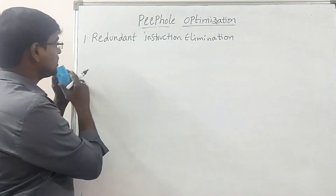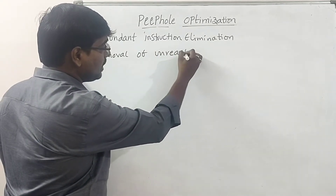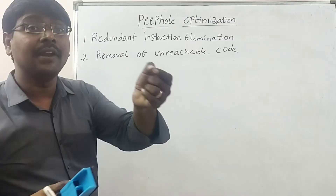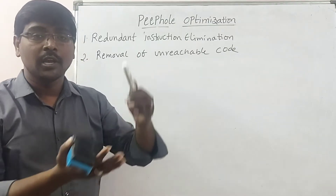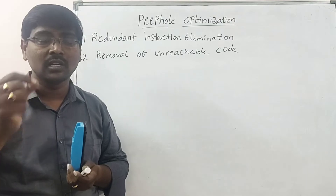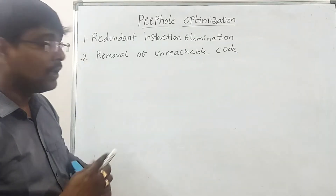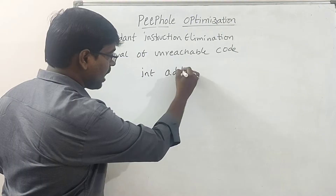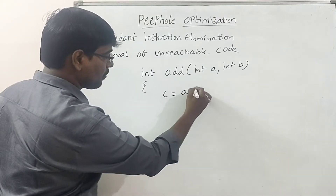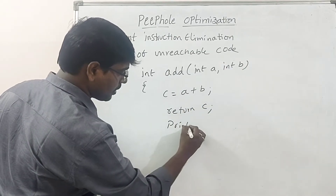The second technique is Removal of Unreachable Code, also simply called dead code elimination. Unreachable code is any instruction that is never executed during program execution. For example, consider a function int add(int A, int B) — within the function we perform the addition operation, and then return the value of C.